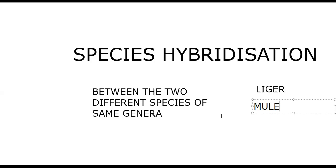With very closely related species of a particular genus, breeding is possible, but only sterile offspring will come.